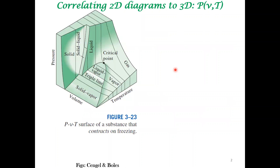For a simple compressible system, in a single-phase region, if you specify two intensive variables, the third intensive variable is a function of the two other intensive variables. So in some ways you can say that pressure is a function of specific volume and temperature, because once you specify the specific volume and temperature in the single-phase region, pressure is automatically specified. You can write pressure as a function of specific volume and temperature — this is one way of saying the same thing in a visual manner.